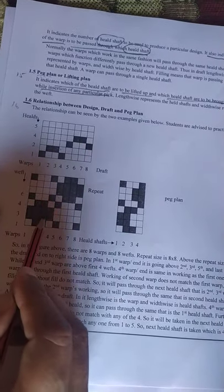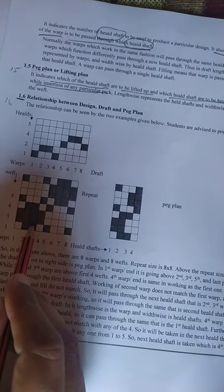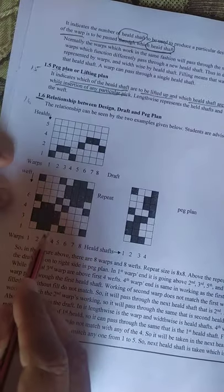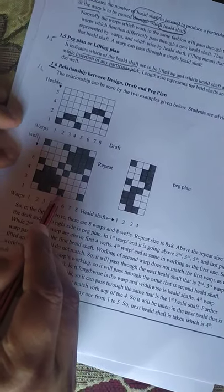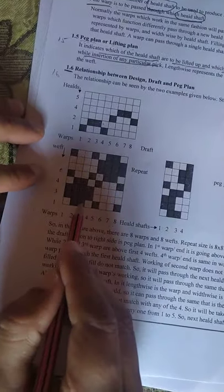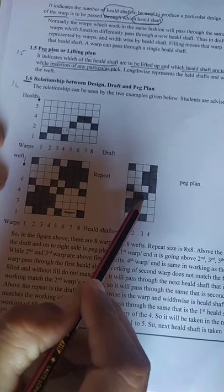When a design comes, you need to create draft and peg plan. This went to first healed shaft, this matches with second, this doesn't match so goes to next. This way draft is created from the design, and peg plan is created.